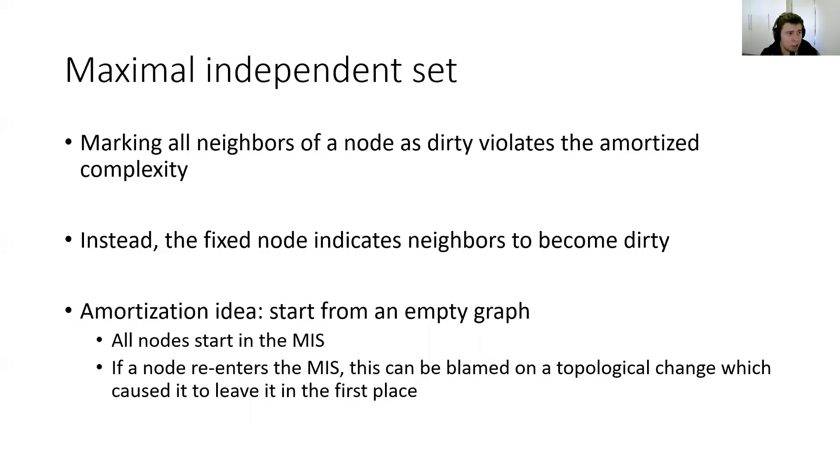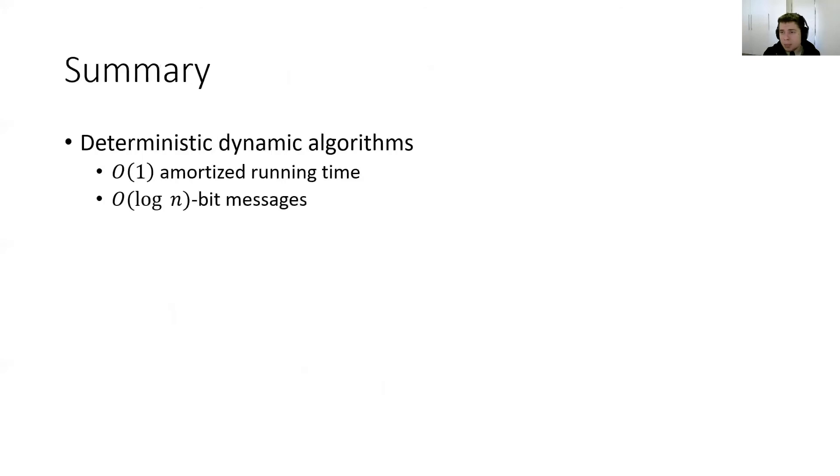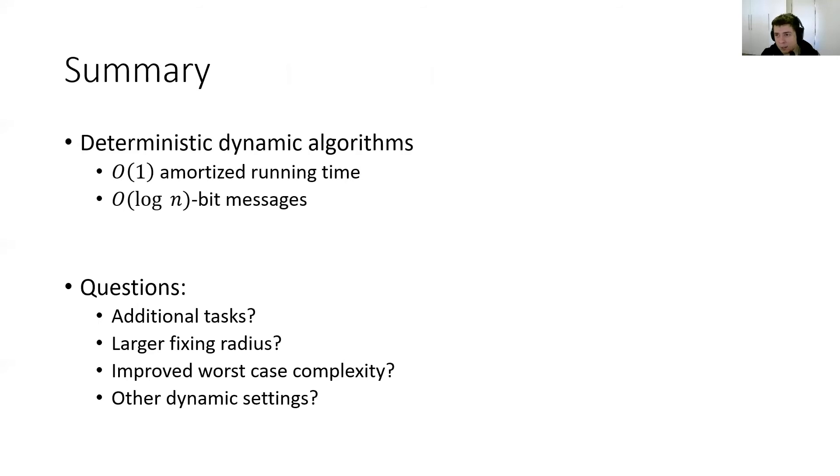So this is the main idea there. In summary, in this work, we obtain deterministic algorithms in a highly dynamic setting with O of 1 amortized running time and using O of log n bit messages. We think that our work raises many interesting questions. For example, what other additional tasks can we locally fix? Whether we can deal with tasks of larger radius—with this work, we only consider tasks of radius one. Whether we can improve the worst case complexity. And of course, maybe we can also consider other dynamic settings. Thank you.